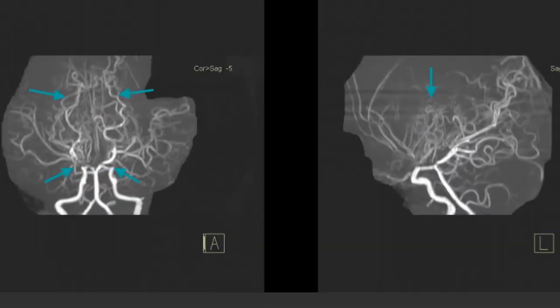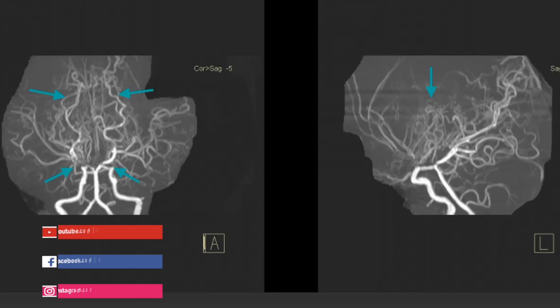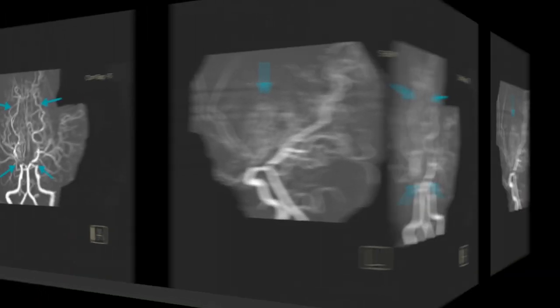Angiography images show gross narrowing of supraclinoid segments of both internal carotid arteries and M1 segments of both middle cerebral arteries. Multiple prominent collaterals are seen.